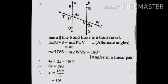Now angle UVS and angle WVS are in a linear pair. That is, measure of angle UVS plus measure of angle WVS is equal to 180 degrees. Substituting the values, 4X plus 2X is equal to 180 degrees. So 4X plus 2X gives us 6X. Therefore, 6X is equal to 180 degrees, and the value of X here is 30 degrees.